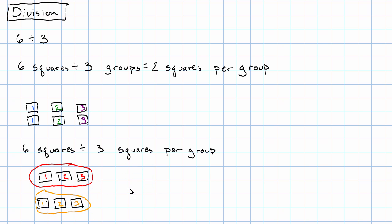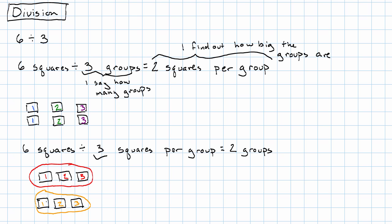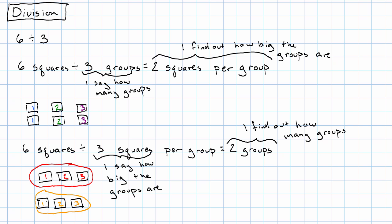You'll notice, looking at these pictures, that the pictures are very, very similar — that's not a coincidence. We get two groups. We can think of division in both ways: we can say how many groups and find out how big the groups are, or we can say how big the groups are and find out how many groups.